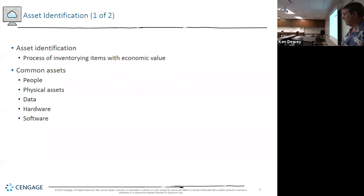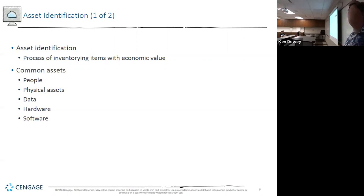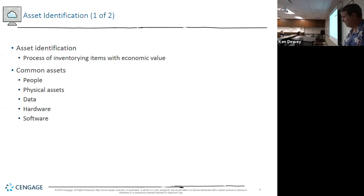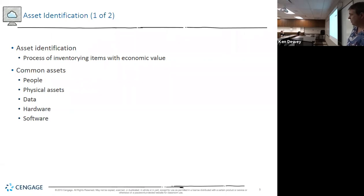Data is a big deal. We have student records here — that's data, but it's nothing we would sell. But a lot of places do sell data and consider it an asset. Hardware and software could also be an asset. I'm in charge of all the assets here in this building, and some of the stuff is so old — we have a laptop I think was issued back in 2004. In our inventory, it's probably valued very high.